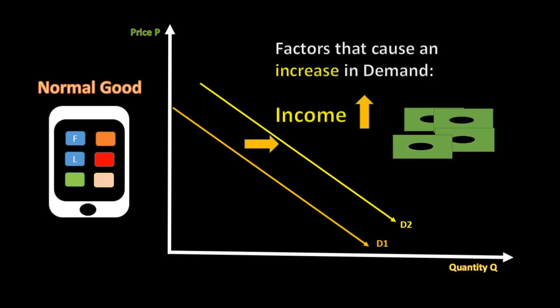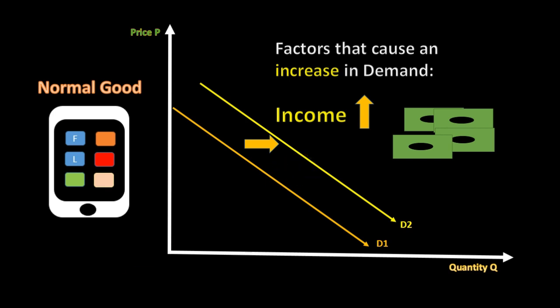One factor that shifts the demand curve is income. If the population's income goes up, they're probably willing to buy more of most goods. For example, if we're talking about tablets, people would probably buy more tablets. There may be no change in the price of a tablet, but if the population's income goes up, people would purchase more tablets due to that fact, and because something other than price is changing quantity, that's going to shift the demand curve to the right.